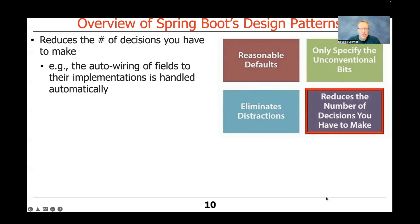One of the nice things about the convention over configuration pattern is it reduces the number of decisions you have to make. For example, you don't have to hand-code the implementations of fields in your classes — those things can be auto-wired together using various dependency injection tools. You have less to deal with, you can focus on implementing your code, and leave it to the framework to wire all the pieces together. When things go well, this is wonderful. When things go poorly, you can be perplexed because there are implicit dependencies that can be mystifying to debug.